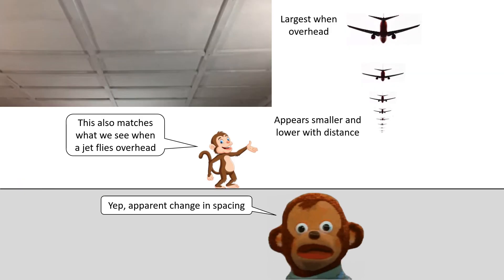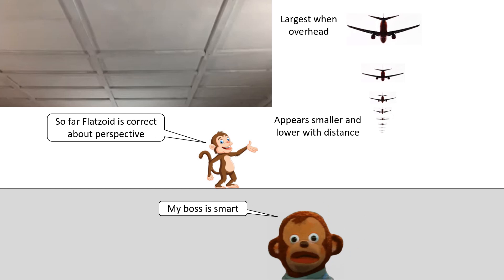Now obviously, this also works when we see a jet fly overhead. It is the largest one directly overhead, and then it appears smaller and lower as it flies off into the distance. So far, FlatSide has given a very good demonstration about how perspective works with overhead objects that are farther in the distance.